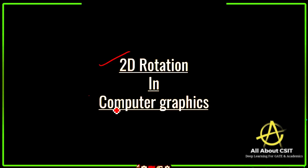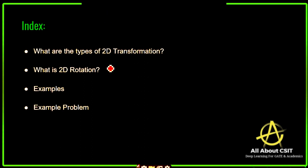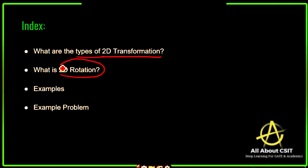Now let's see what topics I am going to cover in this video. We will see what exactly 2D transformation is, and next what are the types of 2D transformations. One of the techniques is 2D rotation. We will discuss what exactly 2D rotation is with examples, and finally we will work out one example problem so that you will get complete clarity on how the object is rotated based on the angle.